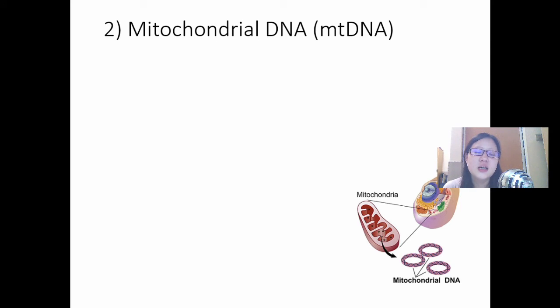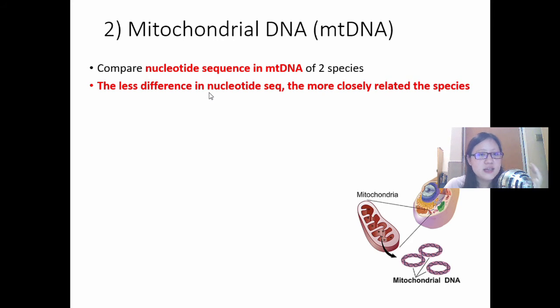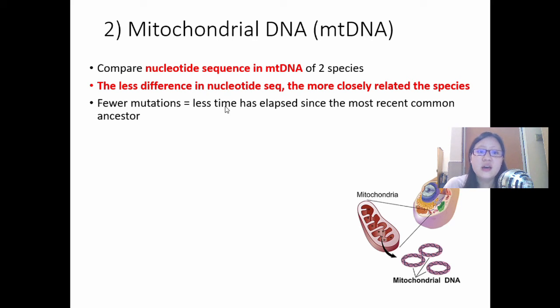Let's move on to the next evidence for evolution. Again, this is molecular evidence. And this is using mitochondrial DNA. So, this is where we take two species. We take their mitochondrial DNA and we compare the nucleotide sequence. The DNA sequence in the mitochondria, the idea is very similar. The less difference it is, the less difference in nucleotide sequence, the more closely related. Why mitochondrial DNA? Why not nuclear DNA? Wouldn't that make more sense?